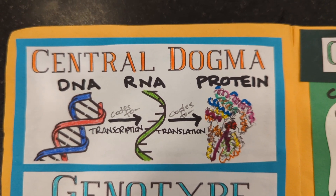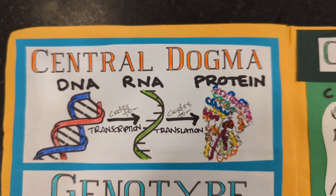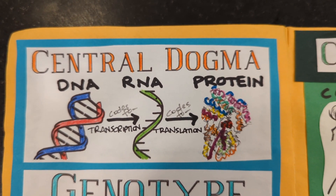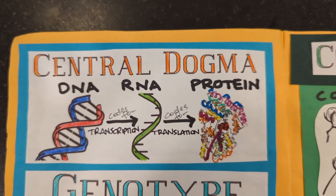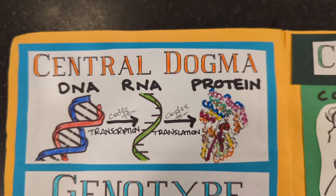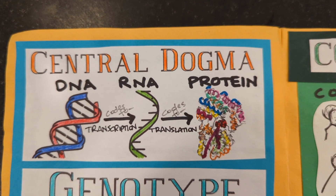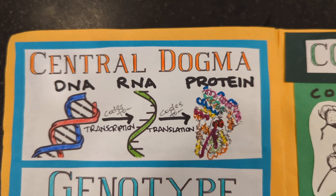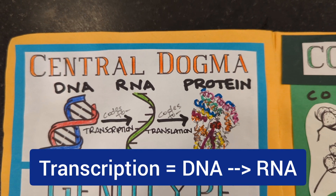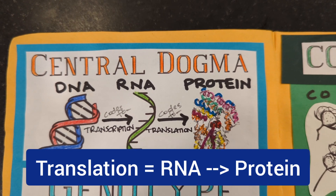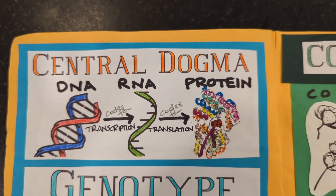RNA codes for protein, and information flows one way — always from DNA to RNA to protein. To get from DNA to RNA, there's a process called transcription, and to get from RNA to protein, there's a process called translation. We will learn more about those processes later on.